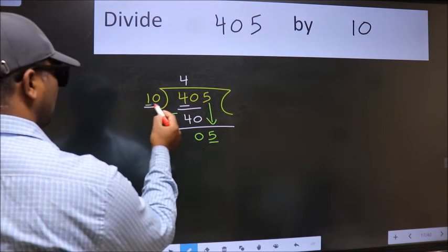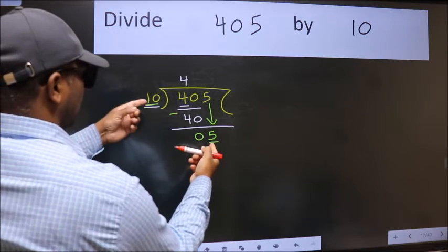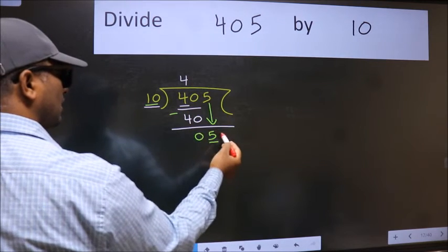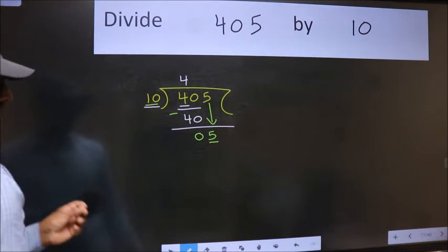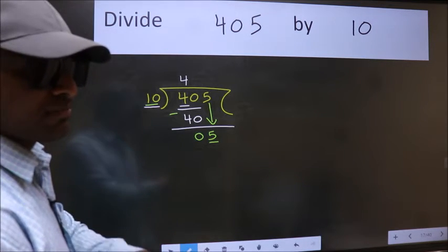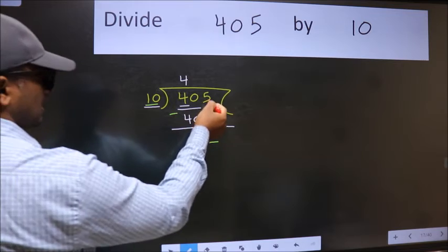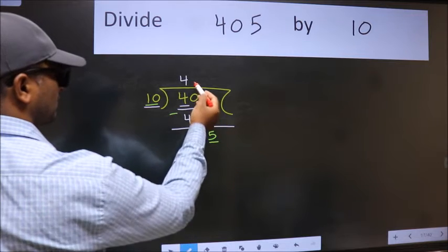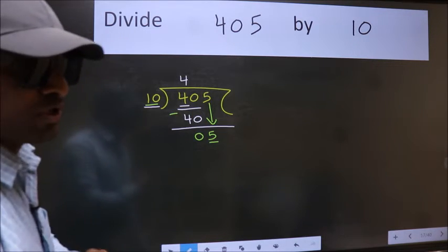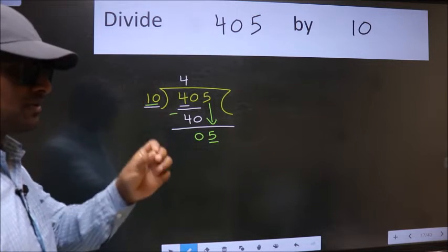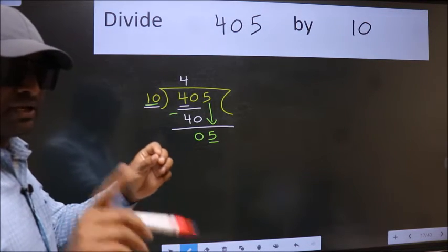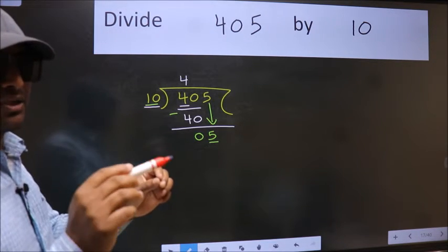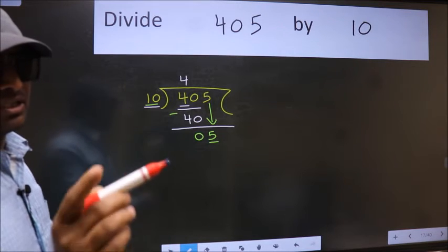Here we have 5 and here 10. 5 is smaller than 10. So what many do is they directly put dot, take 0, which is wrong. Why is it wrong? Because just now you brought this number down, and in the same step you want to put dot, take 0. I repeat: bring down the number and put dot, take 0, both at the same step - you should not do.